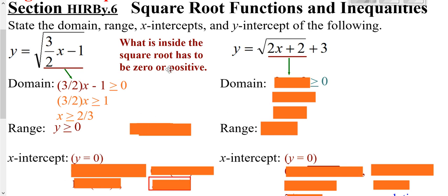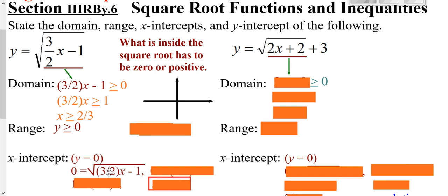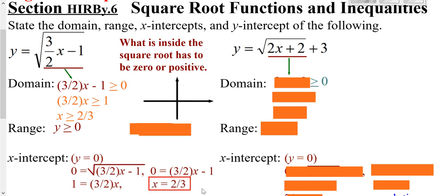Looking at your axes: if you're looking for your x-intercept — where you're crossing the x-axis — that means your y value is zero. So if I plug in zero for y and solve this, I could square both sides, then add one to both sides, then get rid of the times three-halves by dividing by three-halves or multiplying by two-thirds, and I get two-thirds.